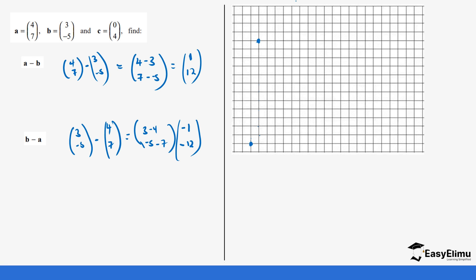That means we are moving one unit on the x-axis to the left side and twelve units on the y-axis downward. We put our beginning point near the top so we have enough space. From the starting point, we move one step on the x-axis in the negative direction, and then twelve steps downward — one, two, three, four, five, six, seven, eight, nine, ten, eleven, twelve. This is our terminal point. Join the beginning point to the terminal point to get your vector. Make sure your vector has an arrow.